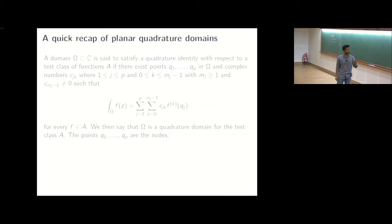Let me first recall that a domain is said to satisfy a quadrature identity if, so this is in the planar case right now, if we have a domain omega, if we have points q1 and q2 up to qp in omega and complex constants cjk such that for any function f in a given test class...